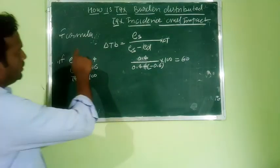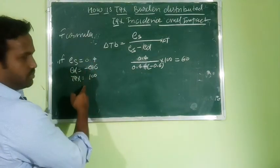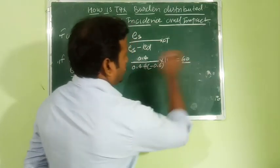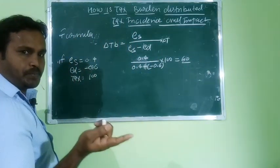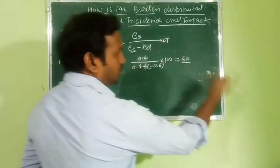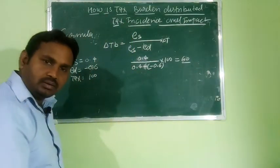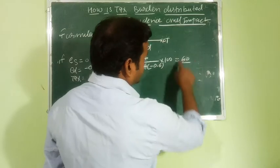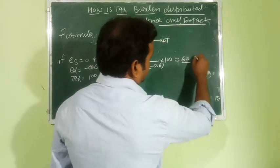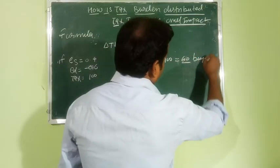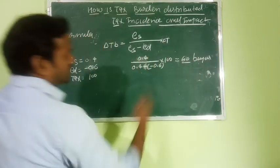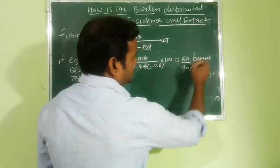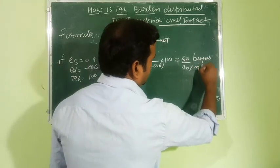It means 60% of the tax share is paid by the buyer, and the rest — 40% — is paid by the seller.